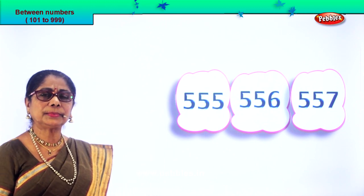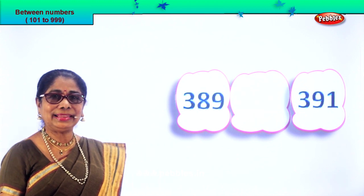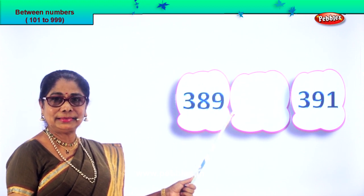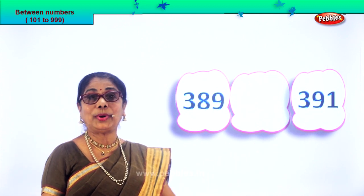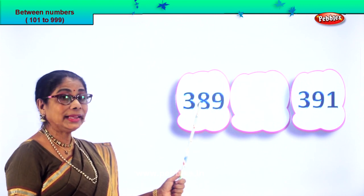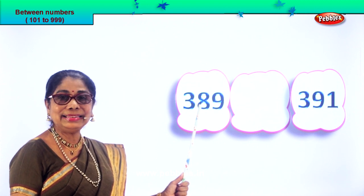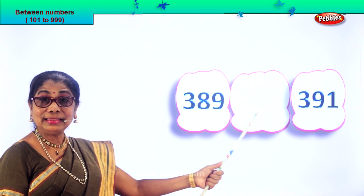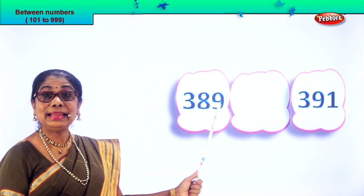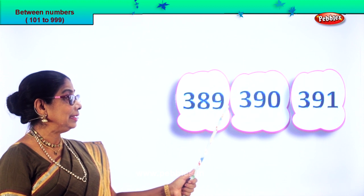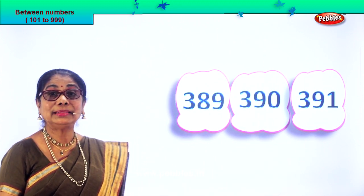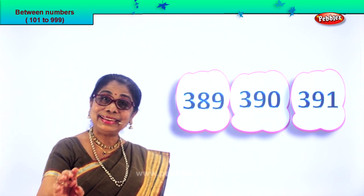And you will enjoy finding the number between. Read aloud: 389 and 391. After 9, the number that follows is 10, so after 89 comes 90. So you have 389, 390, 391. The number between is 390. Did you enjoy?